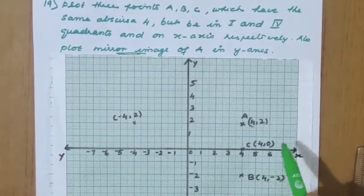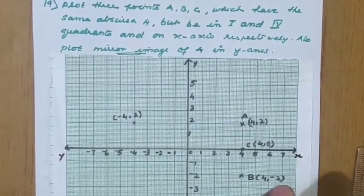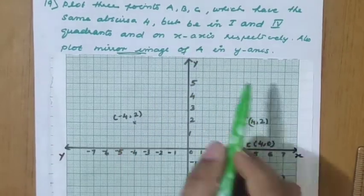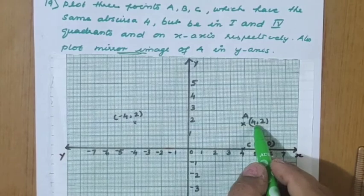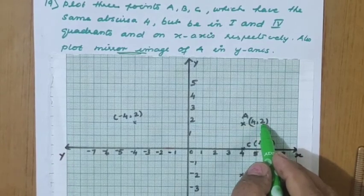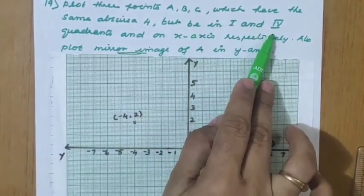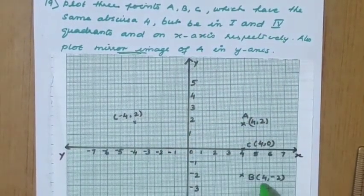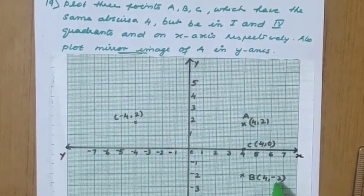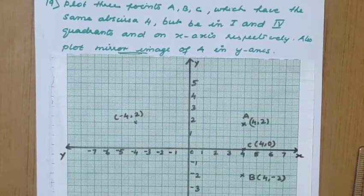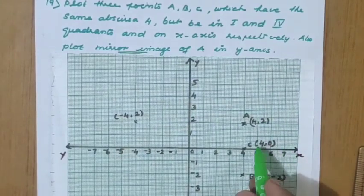In the first quadrant, x value is 4 and y is our choice. I have taken A as (4, 2) — abscissa is 4 and ordinate is 2. For B, which lies in the fourth quadrant, abscissa is still 4 but y is negative, so B is (4, −2). For C on the x-axis, y equals 0, so C is (4, 0).